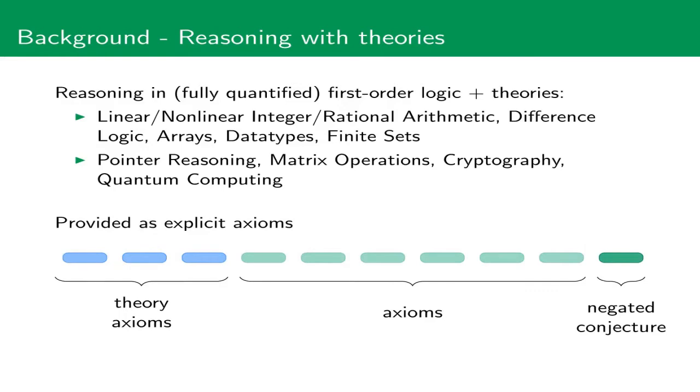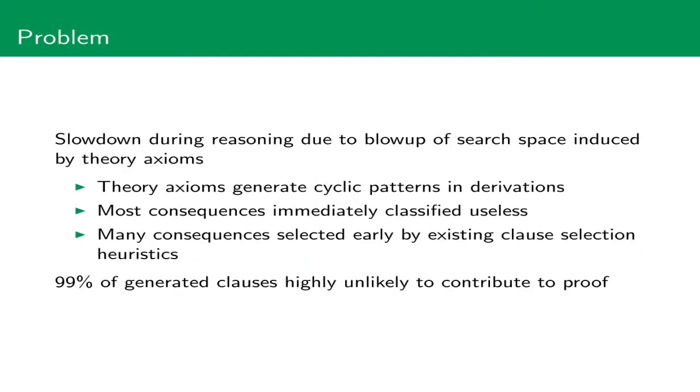The standard approach to enable saturation-based theorem proving to reasoning in such theories is to provide an explicit list of axioms directly into the search space. In particular, we then not only start from the axioms and the negated conjecture but also from the theory axioms, which throughout the talk I will visualize using blue boxes. While providing explicit axioms is an intuitive and easy solution which works incredibly well in many instances, there is the big problem that for many examples we see a big slowdown due to the blow-up of the search space induced by the theory axioms.